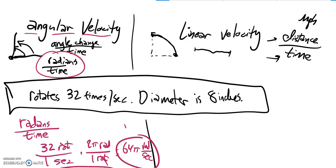It's about 201.06 radians per second. Both these answers are good. That one's exact, and this one is an estimate.